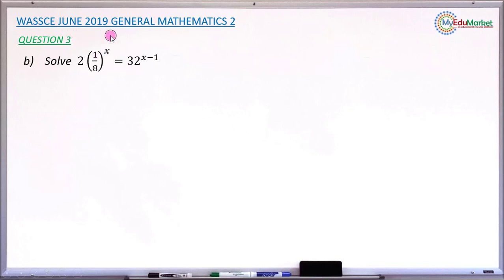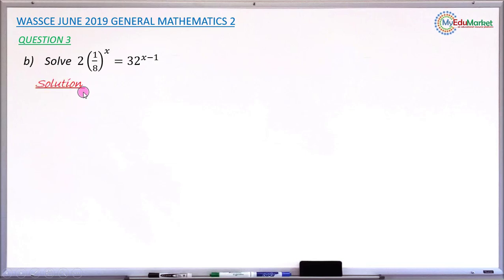This is WAEC June 2019 General Mathematics Paper 2, and we are answering question number 3b. The question says: solve the equation 2 multiplied by (1/8) raised to the power of x equals 32 raised to the power of x minus 1. This is the equation involving index numbers that we have to solve.